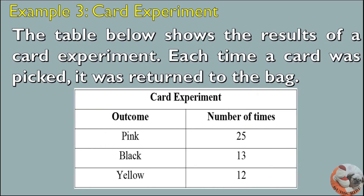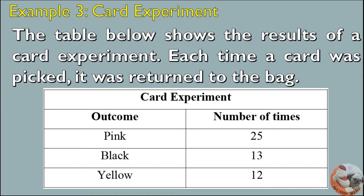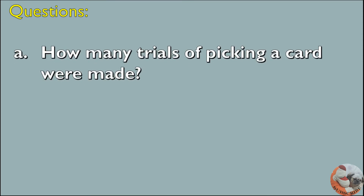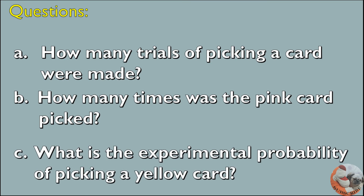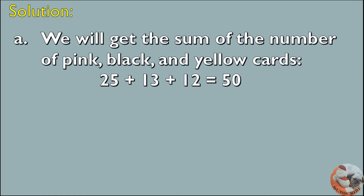Example 3: Card Experiment. The table below shows the results of a card experiment. Each time a card was picked, it was returned to the bag. We have 3 colors: pink, black, and yellow. Pink appeared 25 times, black was picked 13 times, and yellow was picked 12 times. Questions: A. How many trials of picking a card were made? B. How many times was the pink card picked? C. What is the experimental probability of picking a yellow card? Solution for Letter A: We get the sum of pink, black, and yellow cards: 25 plus 13 plus 12 is equal to 50.